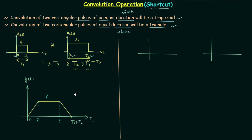To find the height of the trapezoid using the shortcut, simply multiply a1, a2, and t1 — where t1 is the smaller duration. So the height is equal to a1 times a2 times t1.